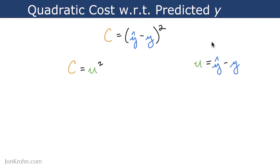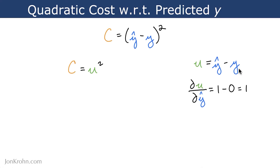Let's start by differentiating the inner function first. We are interested in del u del y-hat. We're actually not at all interested in del u del y, because y is just a data point that we have from our training data. What we are ultimately interested in is calculating the partial derivative of cost with respect to our model parameters m and b. And our model parameters m and b are what determine y-hat, so we'll deal with that later. What matters here in this equation is the partial derivative del u del y-hat — there's no point in calculating del u del y.